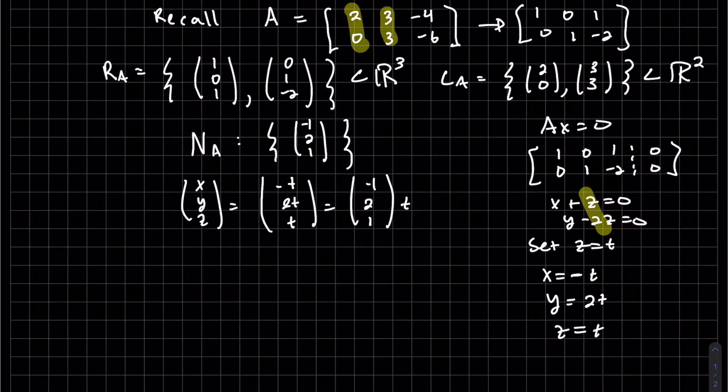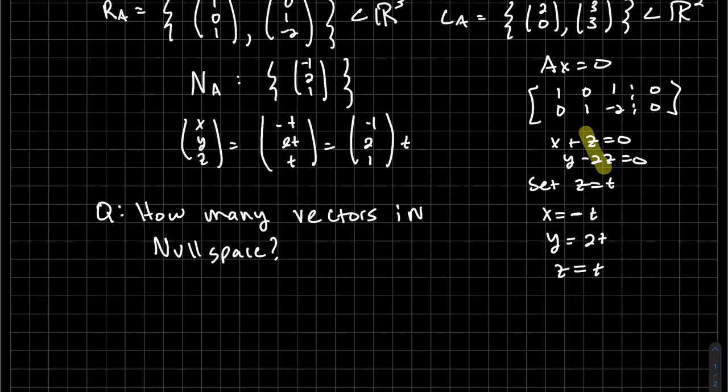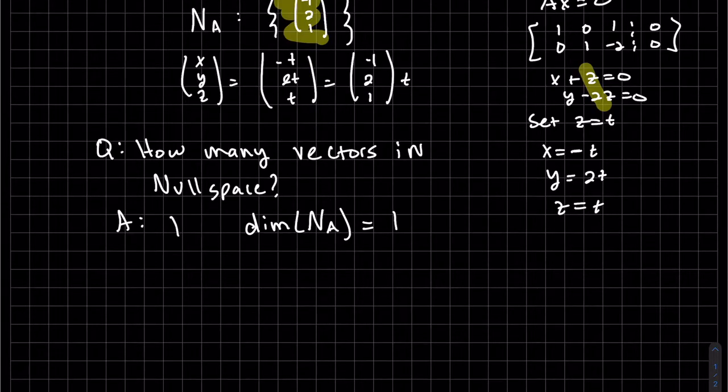So our question, our new question is, how many vectors in null space? And our answer is clearly there's just 1. So we call that the dimension of our null space of A is 1. We also call this the nullity.